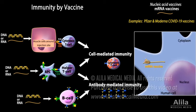the mRNA is translated into viral antigen, which is then displayed on the cell's surface. Unlike DNA vaccines, mRNA vaccines are extremely unlikely to integrate into the human genome, but they are fragile and require an uninterrupted cold chain for transportation and storage.